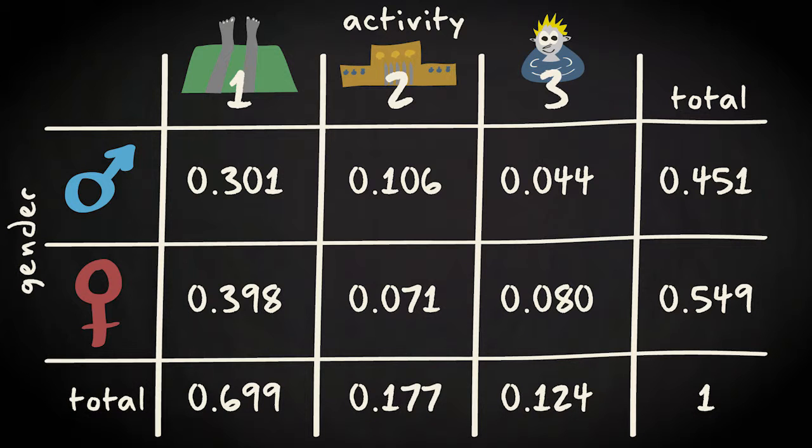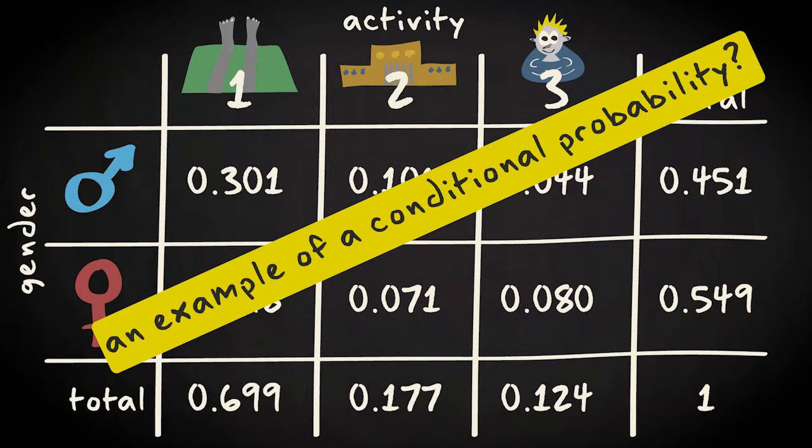So, with these variables, activity and gender, what would be an example of a conditional probability? It are those probabilities for the case where you know the outcome of one variable and then want to calculate the probability of the other variable occurring.